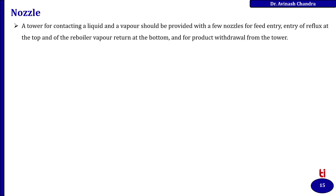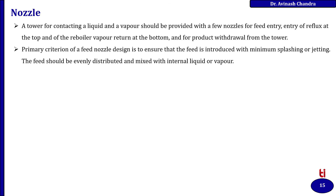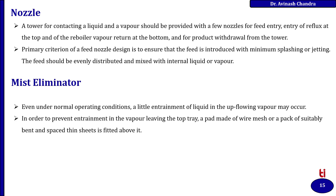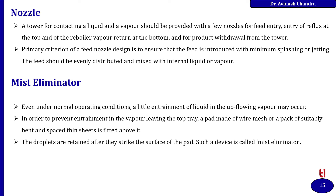Next, the nozzle. A tower contacting liquid and vapor should be provided with nozzles for feed entry, entry of reflux at the top, reboiler vapor return at the bottom, and for product withdrawal from the tower. The primary criteria of a feed nozzle design is to ensure that the feed is introduced with minimum splashing or jetting, and should be evenly distributed and mixed with the internal liquid or vapor. Next is the mist eliminator. Even under normal operating conditions, a little entrainment of liquid in the upflowing vapor may occur. To prevent entrainment in the vapor leaving the top tray, a pad made of wire mesh or a pack of suitably bent and spaced thin sheets is fitted above the tray. The droplets are retained after they strike the surface of the pad; this is called a mist eliminator.